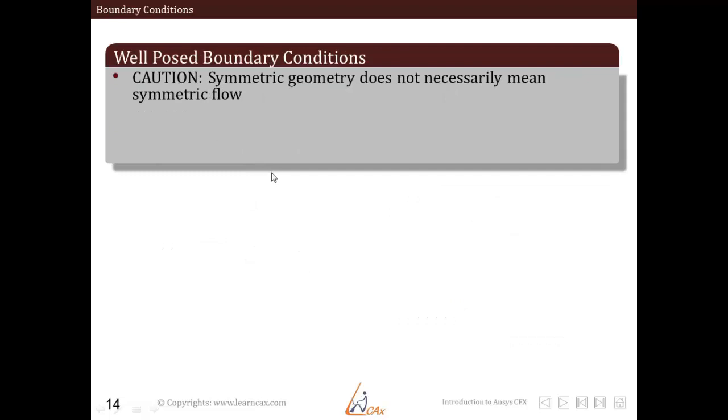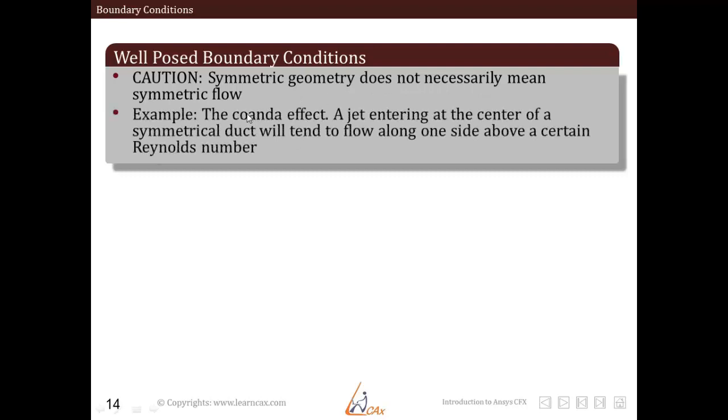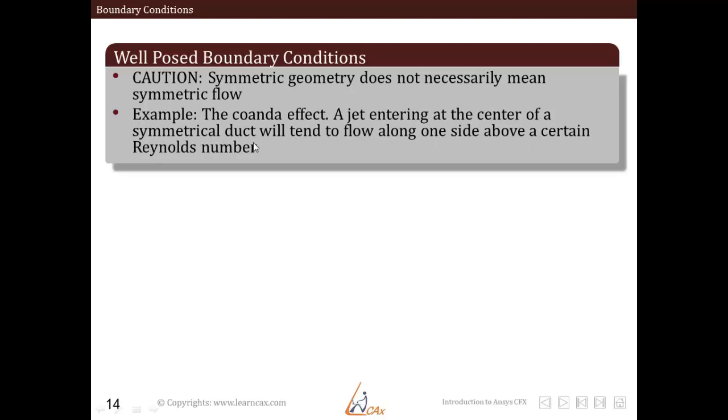Also, it is important to utilize a symmetric boundary condition or symmetric geometry type of approach. It is a caution or a note here that symmetric geometry does not always necessarily mean a symmetric flow. The example is a coin die effect in which the jet entering at the center of a symmetrical duct will tend to flow along one side above a certain Reynolds number.